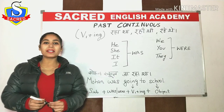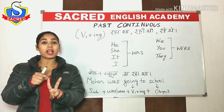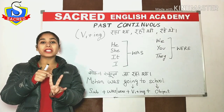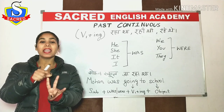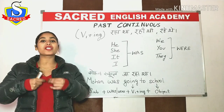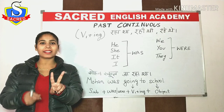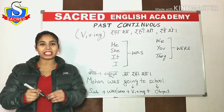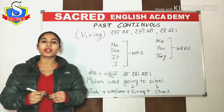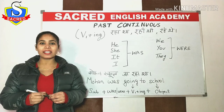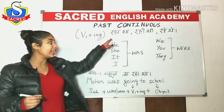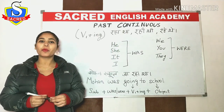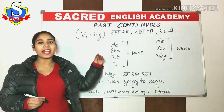Past continuous is a combination of two words: past and continuous. Past means when we talk about something that has already happened. Continuous means when something is ongoing. So together, it means something that was happening in the past. In Hindi, you can identify these sentences when the ending is 'raha tha', 'rahi thi', or 'rahe the'.